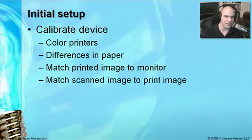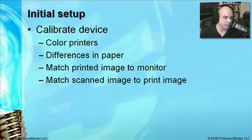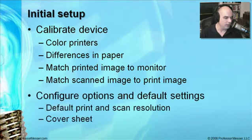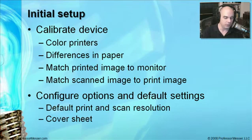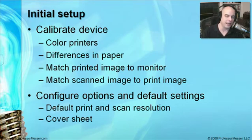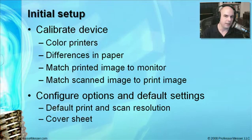If what you're outputting is usually text and reports, this calibration process may not be as important as it is for someone who works a lot with pictures or graphics. We want to first match that image on our screen to what's coming off the printer — make sure the reds are red and the greens are green. Then you want to check the default options and settings for the printer: you can set the default printing resolution, so that every time a printout comes out without you specifying anything, it prints in draft mode or high quality mode. This is important in environments printing a lot, as you'll go through a lot of ink, toner, or paper.